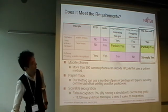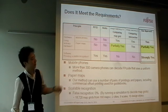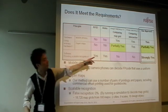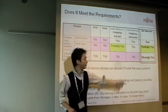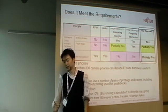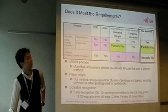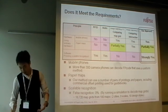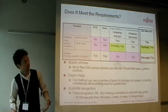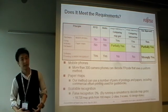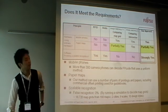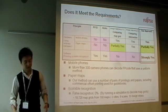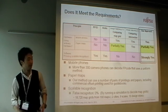The negative point of our system is that it requires an alteration of paper maps. To address this problem, we are now collaborating with major Japanese map publishers to adapt their guidebooks to these embedding systems.